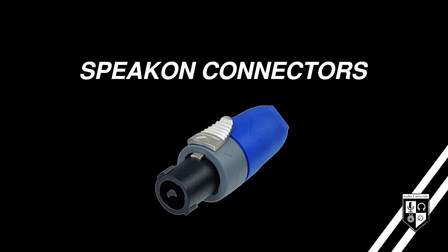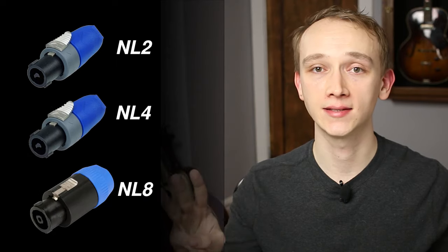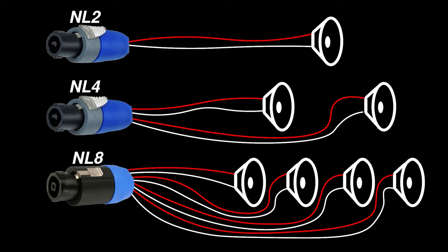You may also encounter Speakon connectors for connecting amplifiers to speakers. There are three basic types: NL2, NL4, and NL8. Speakon connectors are used for speaker circuits, and a speaker circuit requires two pins per circuit. An NL2 contains two pins, so it can facilitate one speaker circuit. An NL4 contains four pins, so it can facilitate two speaker circuits. And an NL8 contains eight pins for four speaker circuits.